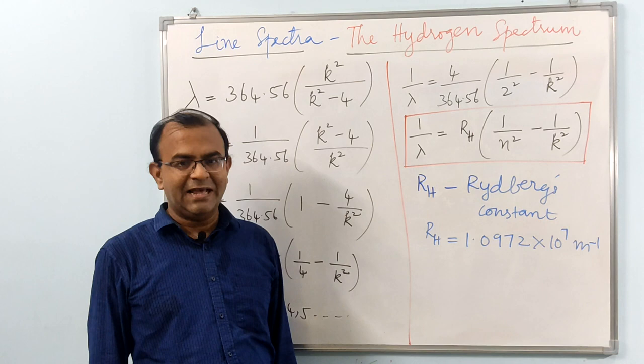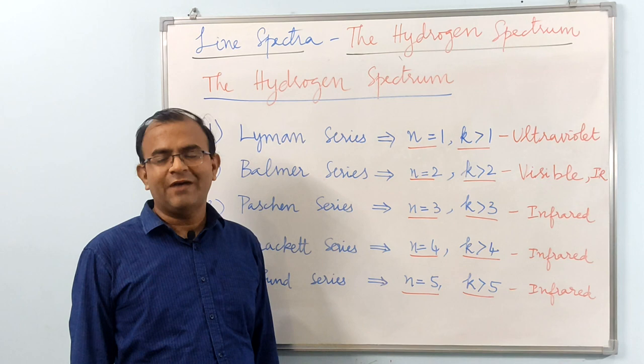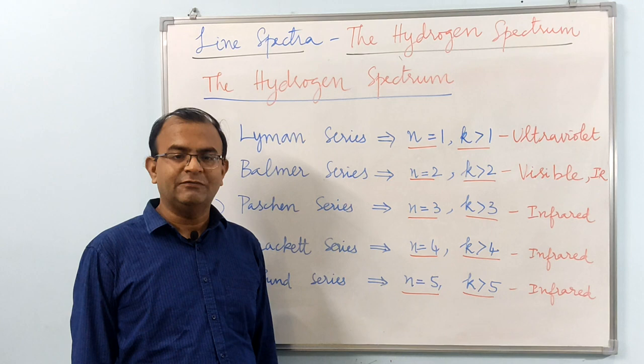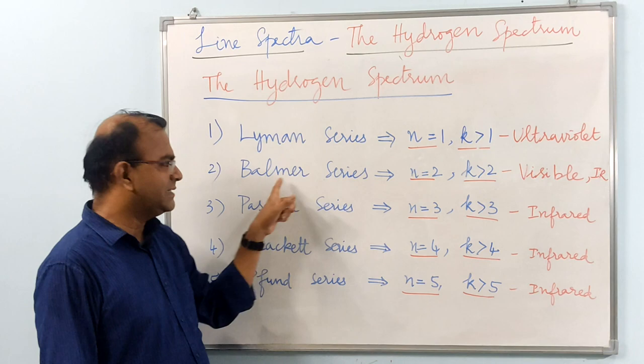In the next 20 years or so after the discovery of Balmer series, four other series of hydrogen atoms for different values of N were discovered. For N equals 1, it is the Lyman series, k must be greater than 1, it falls in the ultraviolet region. For N equals 2, it is the Balmer series, k must be greater than 2, it falls in the visible and higher region.